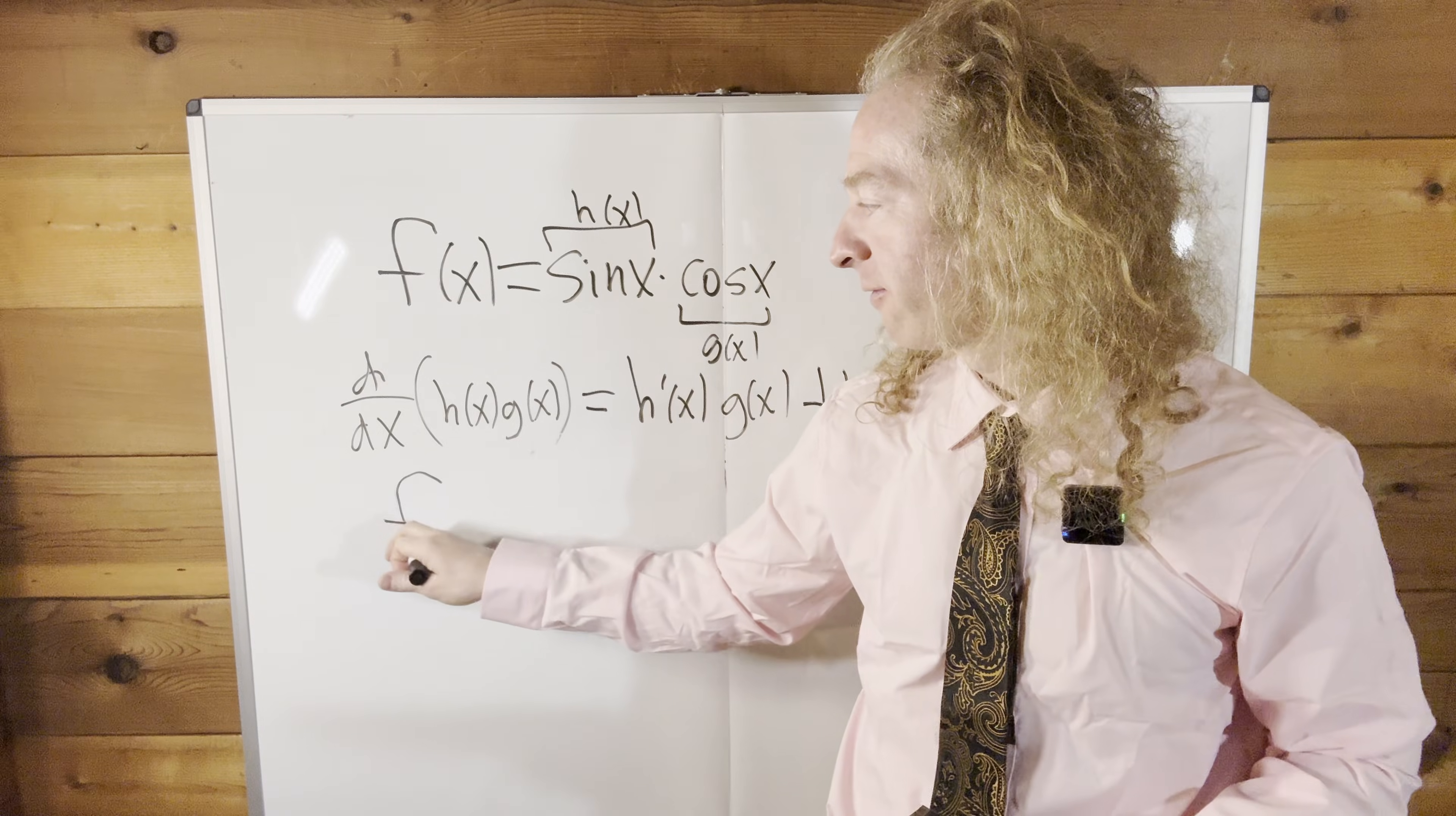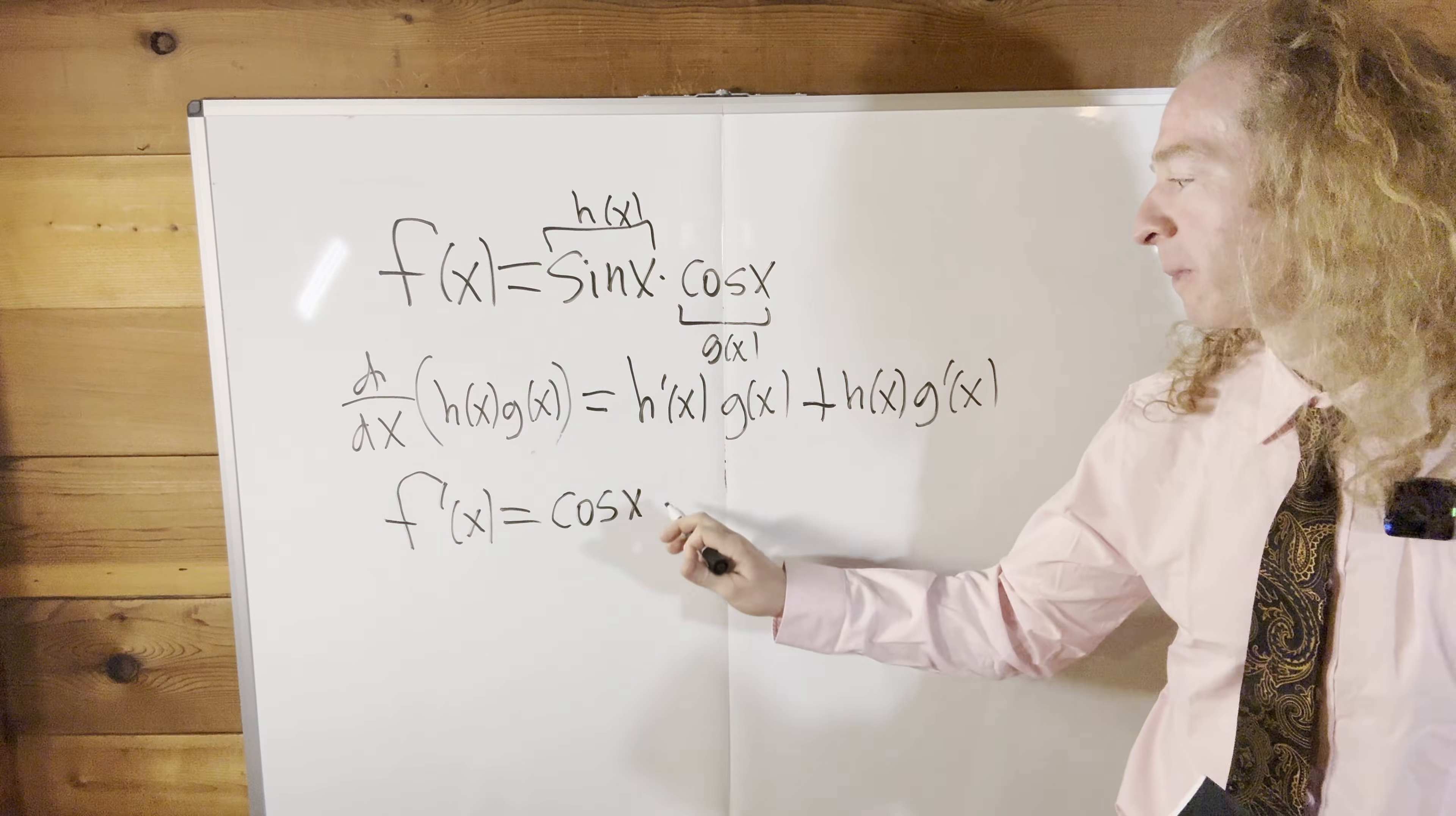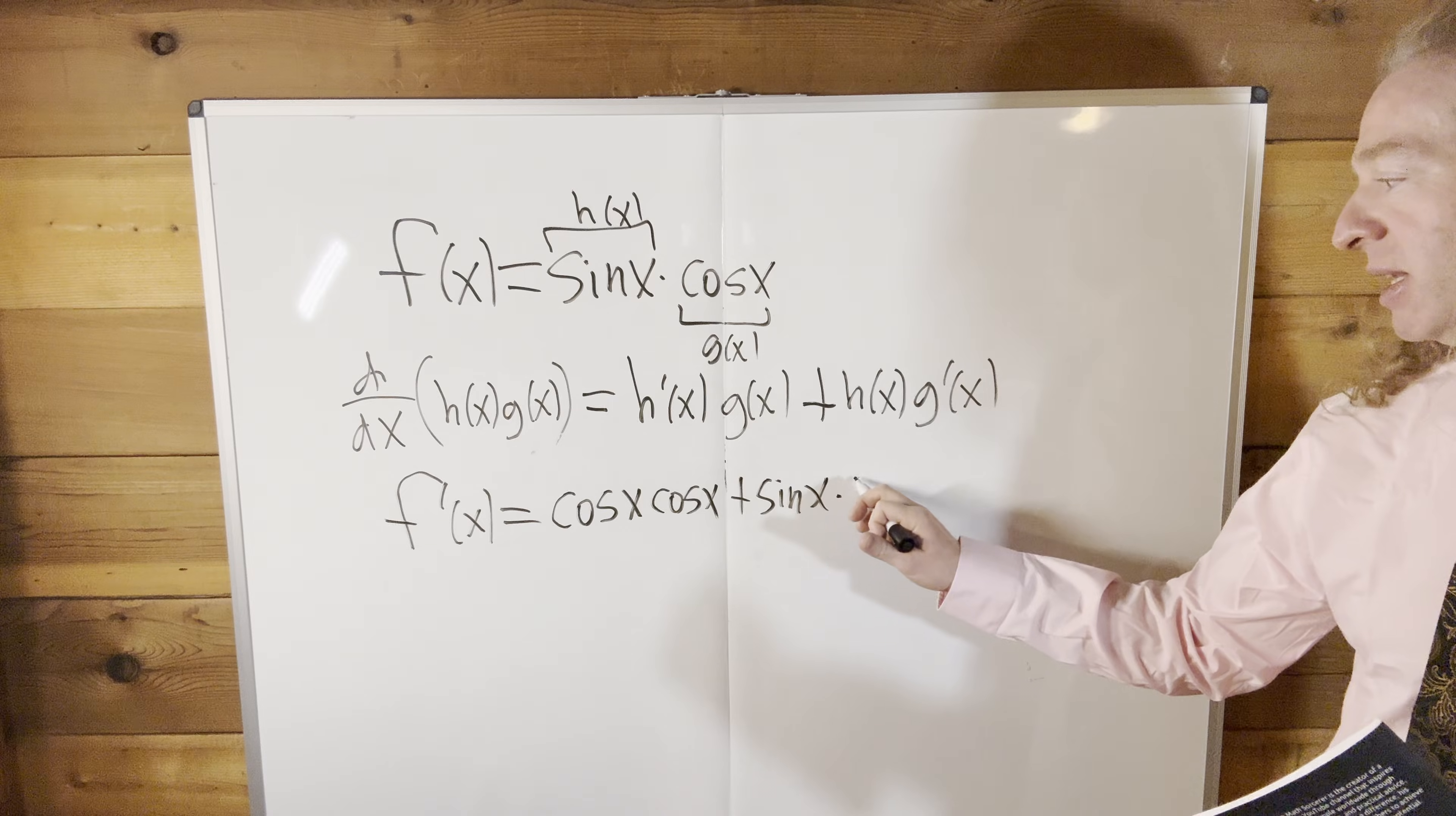So let's proceed. We need f prime of x, right, that's going to be the derivative of the first. So the derivative of sine is cosine, so we have cosine x times the second, which is just cosine, so we leave it alone, cosine, plus the first, which is sine x, times the derivative of the second. And the derivative of cosine is negative sine, so this is going to be negative sine x.